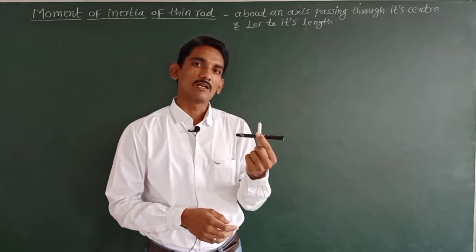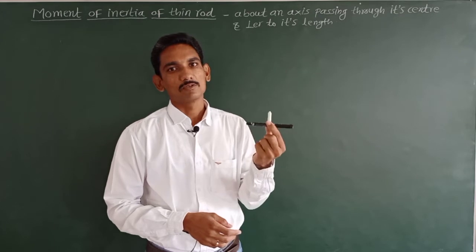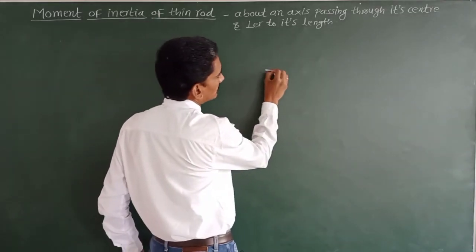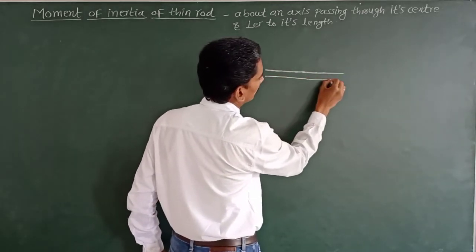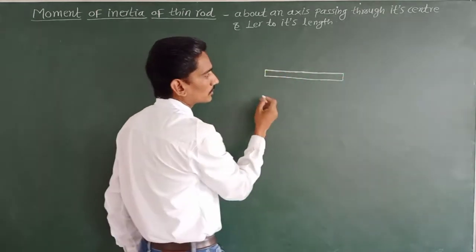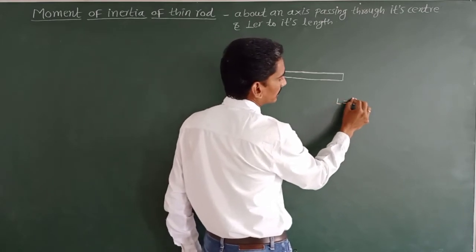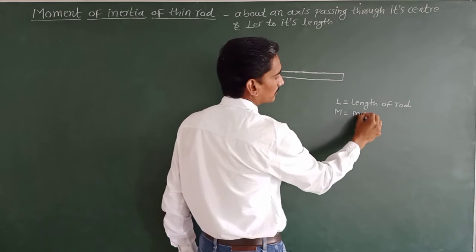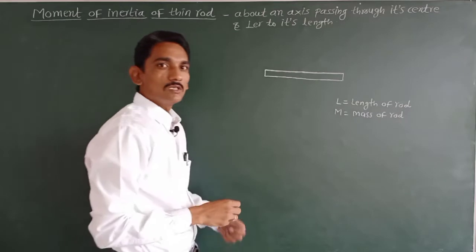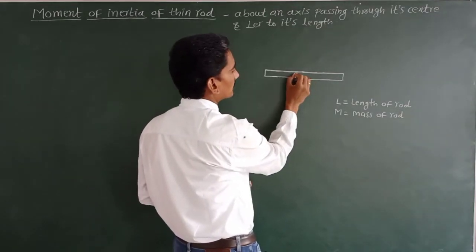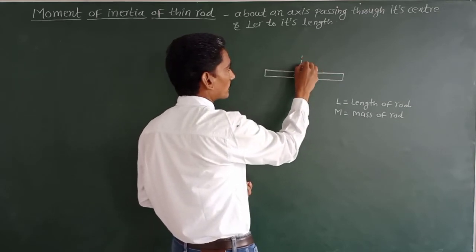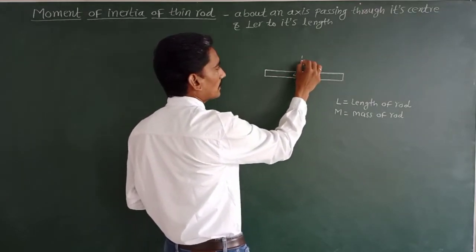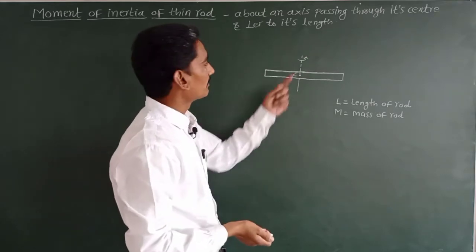How can we find out the moment of inertia of such a thin and uniform rod about an axis passing through its center and perpendicular to its length? For that purpose, we consider a thin uniform rod having total length capital L and mass capital M. The axis of rotation is passing through its center, suppose point O or center C, and the rod is performing rotational motion about this axis.